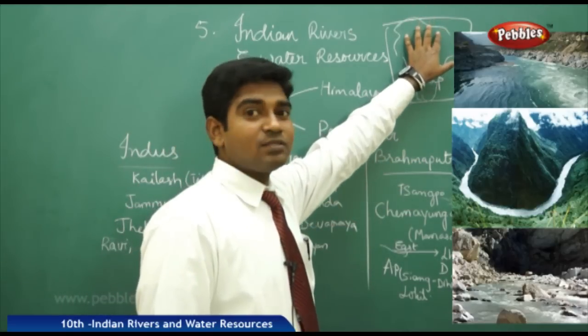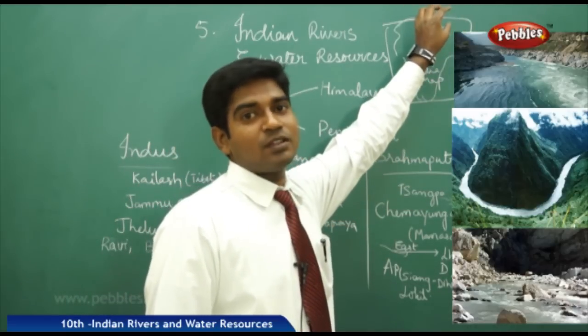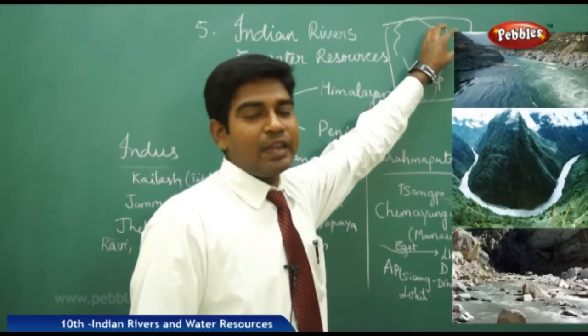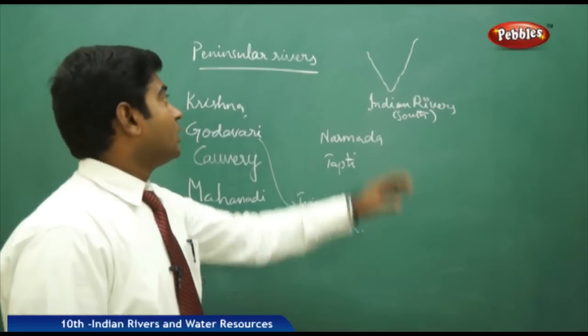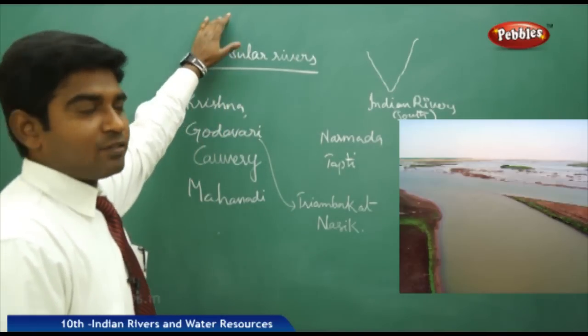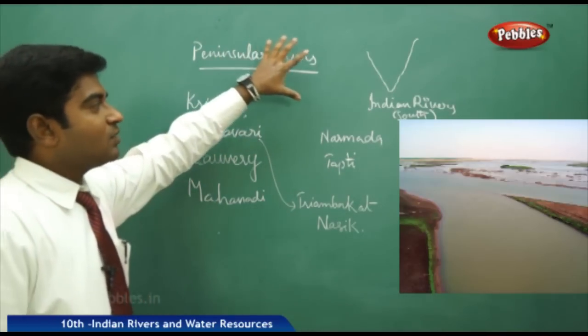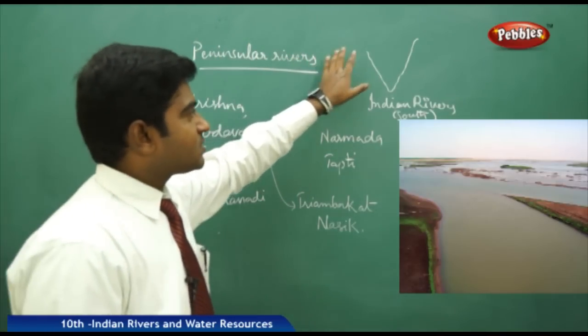To summarize the Himalayan rivers: we have three major ones — Indus, Ganga, and Brahmaputra — almost all originating from the Himalayas, nearby Mansarovar Lake. Now moving on to the Peninsular rivers.